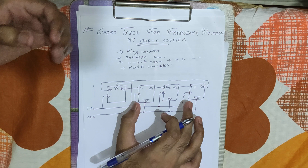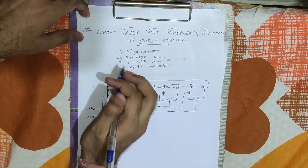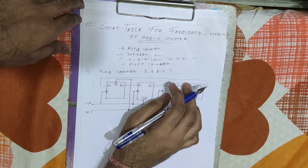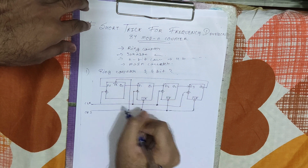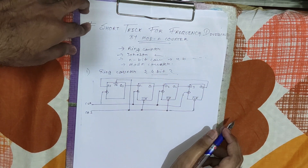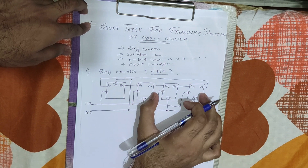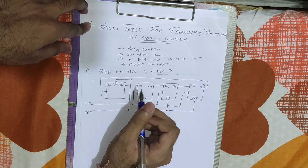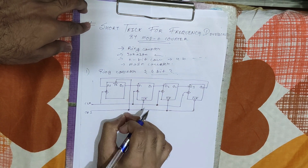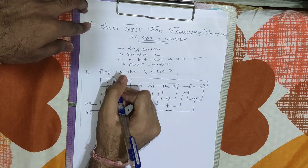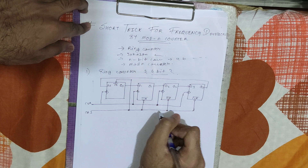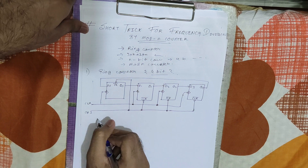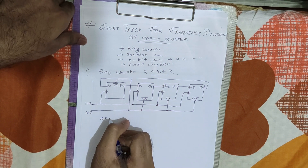Before starting the trick — which is very easy — you should have some concepts related to counters. Let us first get a quick review of certain types of counters. The first counter is the ring counter. This is a 4-bit ring counter. You can identify it because the output of the last flip-flop is given as the input to the first flip-flop, and we will draw the truth table for this ring counter.